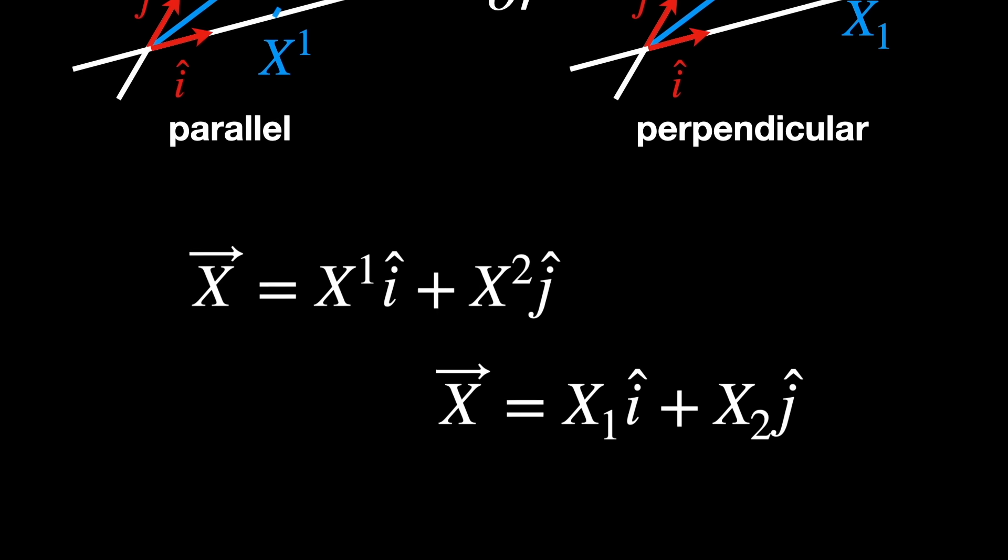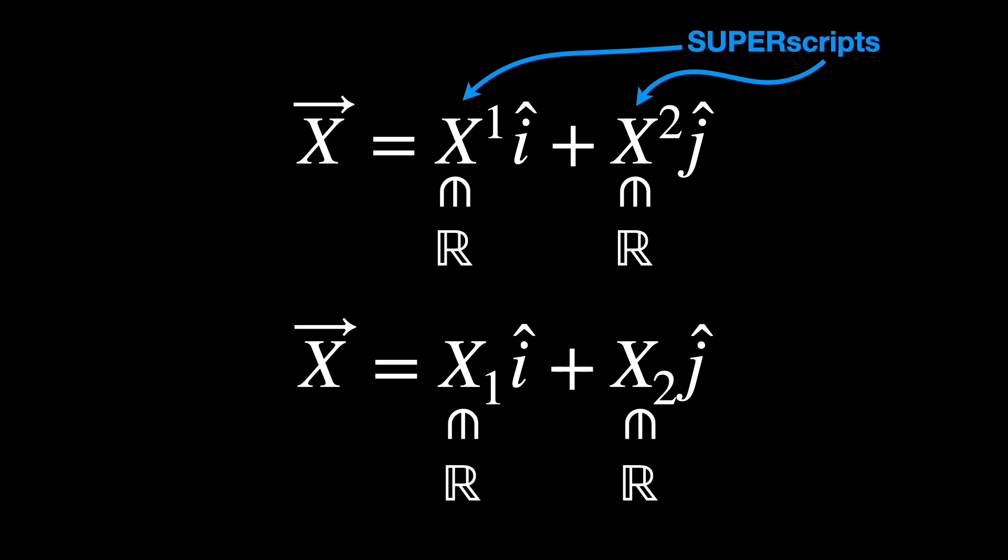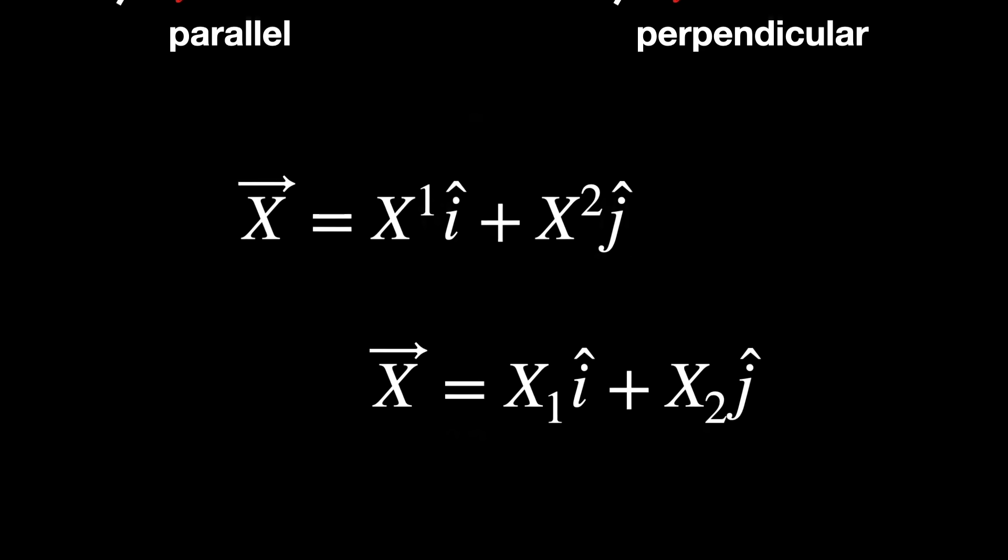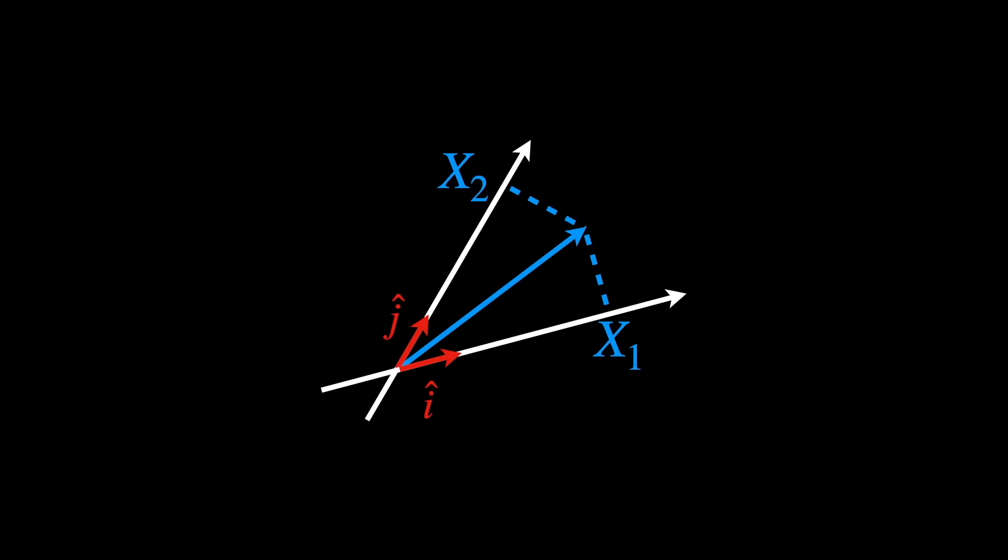In the first representation, we choose to depict the components, which are just real numbers by the way, not vectors, with superscripts. In the second type of decomposition, we use subscripts instead. Actually, the second representation when written this way is wrong, because the unit vectors i and j are usually only used for the parallel projections.